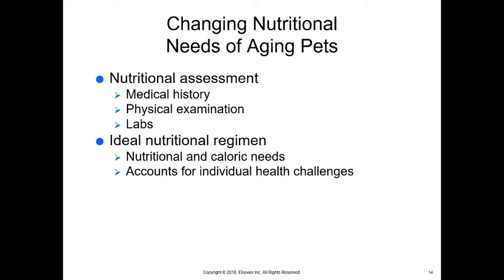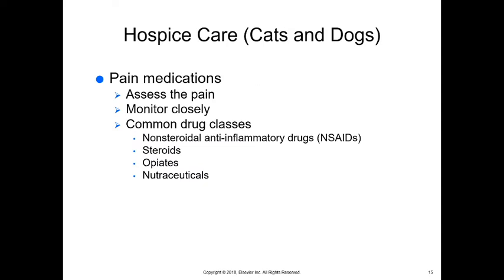Aging pets have changing nutritional needs. A nutritional assessment should be performed using medical history, physical examination, and lab work to determine the best diet. The ideal nutritional regimen is based on caloric and nutritional needs and accounts for individual health challenges. There are many veterinary nutritional diets available, making it easier to make good choices for these patients.